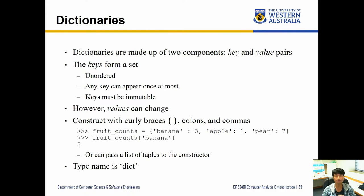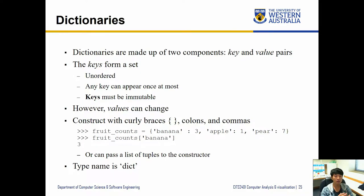Dictionaries are made up of two components: key and value pairs. The key acts like a set — it is unordered and any key can appear at most once. Keys must be immutable, meaning we cannot have duplicate keys and we cannot change or update the key values. If you want to change a key, you'd create a new key and copy the associated value over. The values, on the other hand, are mutable objects inside a dictionary.